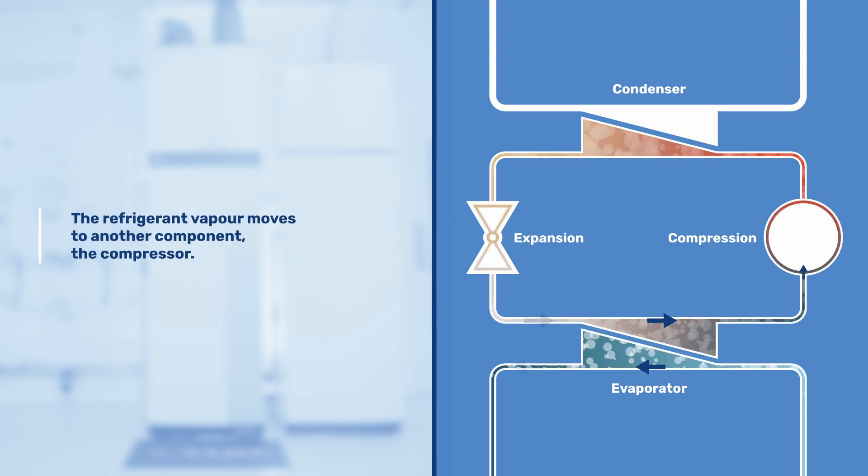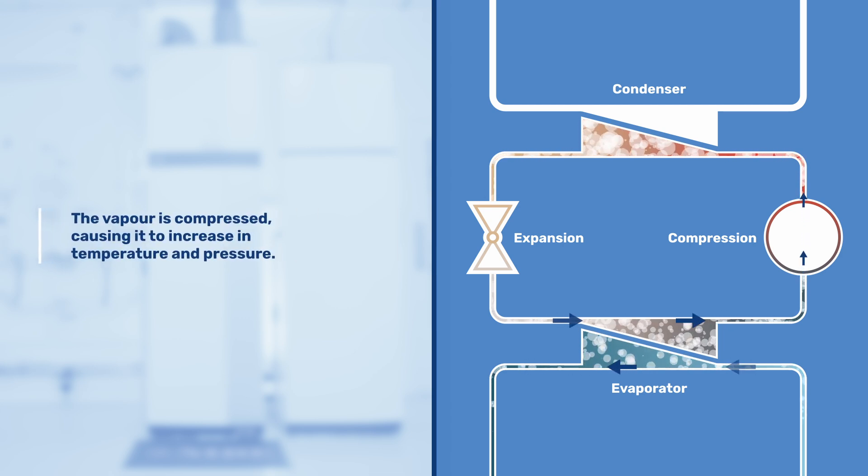The refrigerant vapor moves to another component in the heat pump, the compressor. The vapor is compressed, which causes it to increase in temperature and pressure.